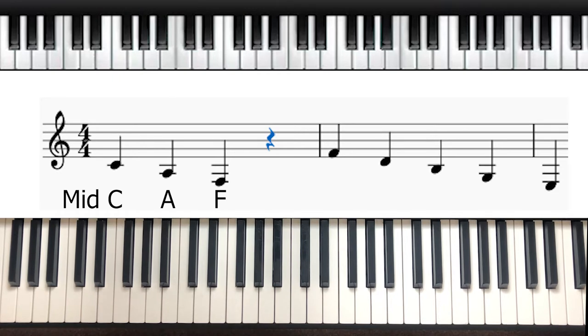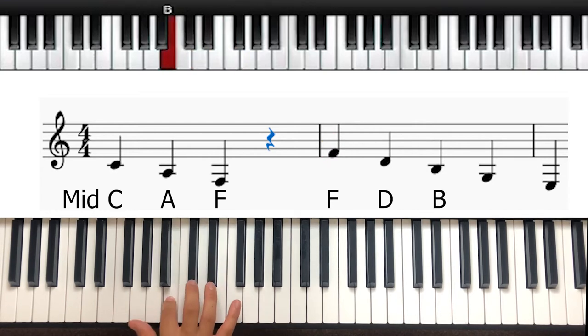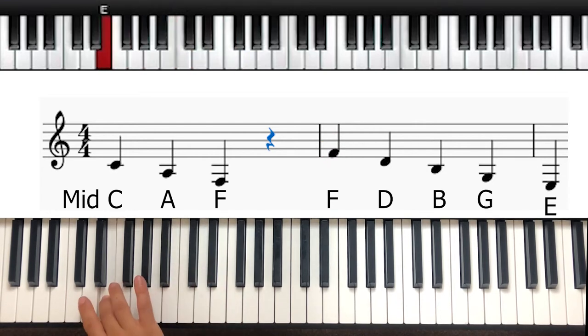In the spaces we know that the bottom space is F, and from here we can just skip to D, B, G, and E with three lines above it.